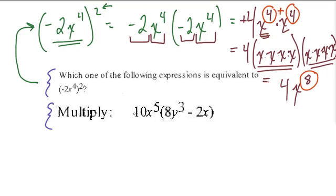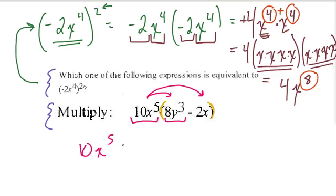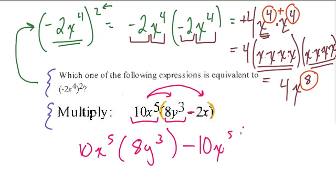In the next example, we have almost the same type of question, except here we need to recognize that the parentheses enclose two terms: 8y to the third and negative 2x. What I would do here is distribute this term to both parts — I'm going to use the distributive property to simplify it. So I'm going to take 10x to the fifth and multiply it by 8y to the third, and then subtract 10x to the fifth times 2x.